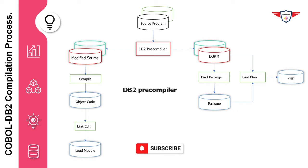The DBRM — Database Request Module — is the output of the DB2 precompiler. The DBRM is fed into the DB2 bind process, which converts all SQL statements present in the DBRM into executable runtime instructions. The bind process performs three important functions: first, it verifies that you are authorized to perform a bind; second, it validates your SQL statement syntax; and third, during optimization, the DB2 optimizer turns your SQL statement into executable code.